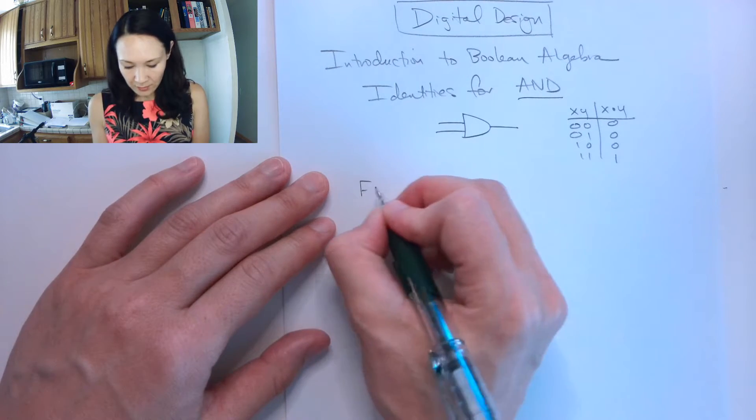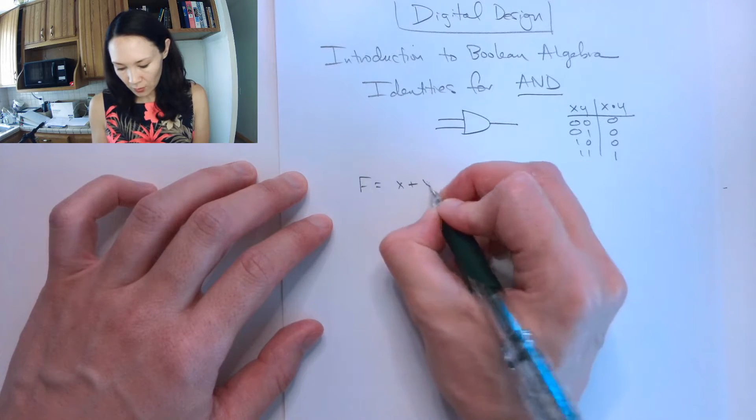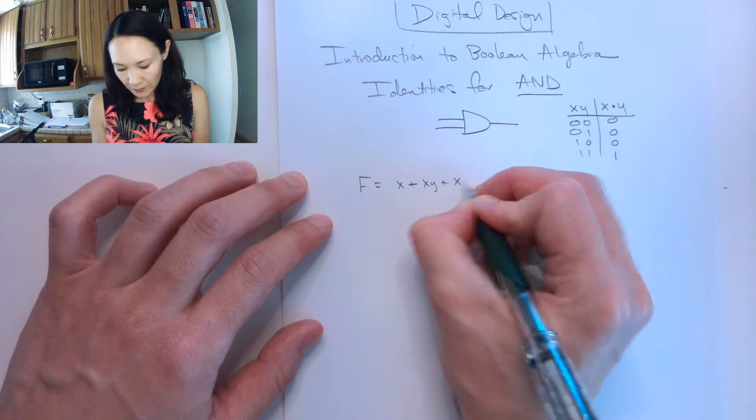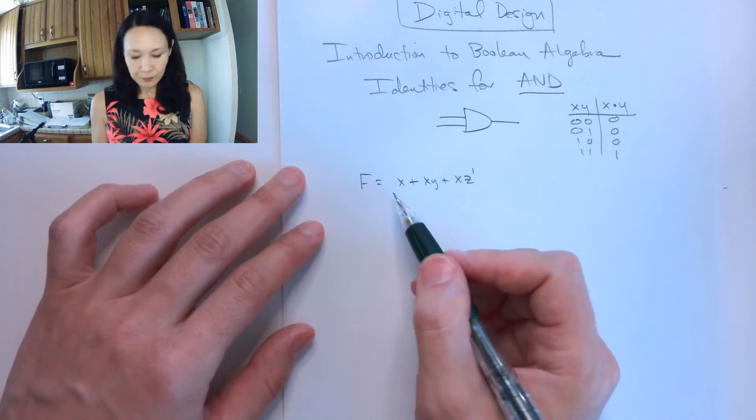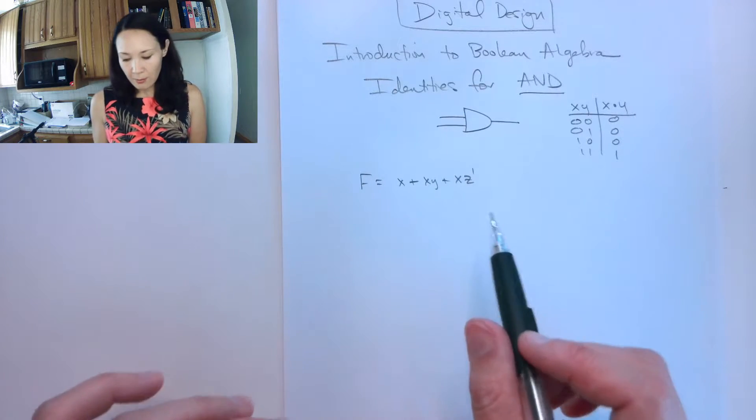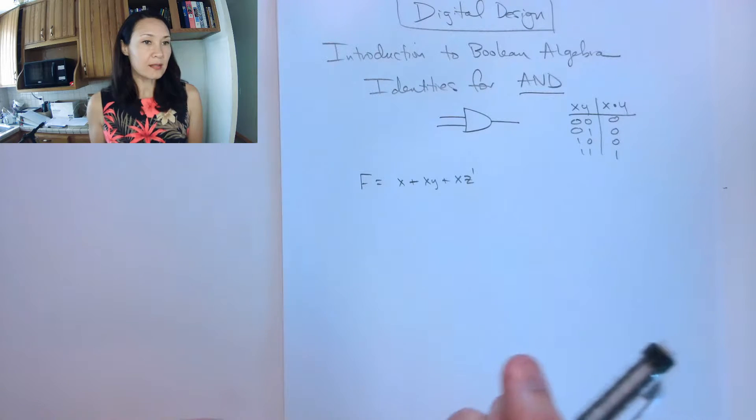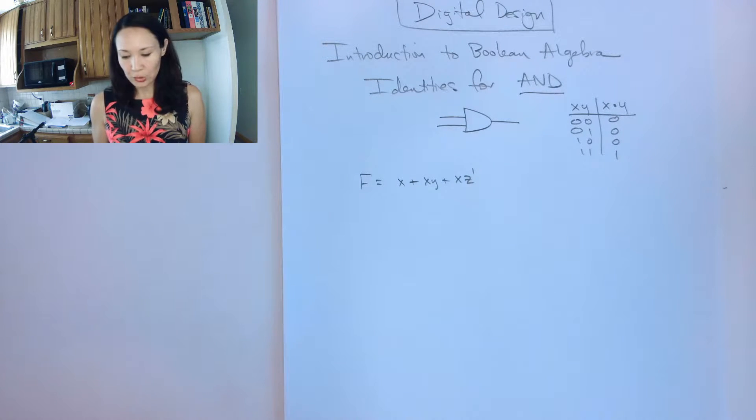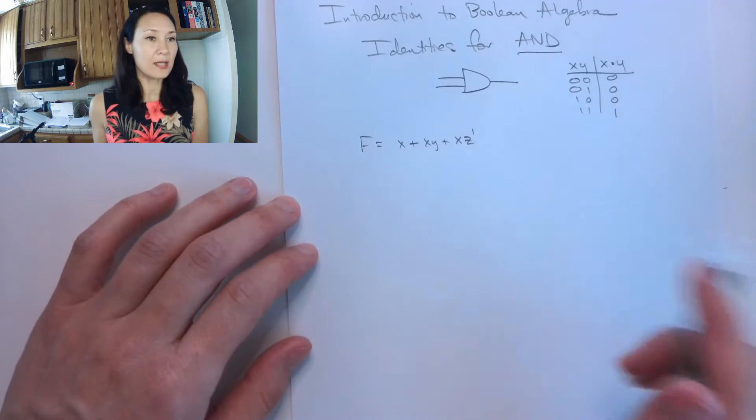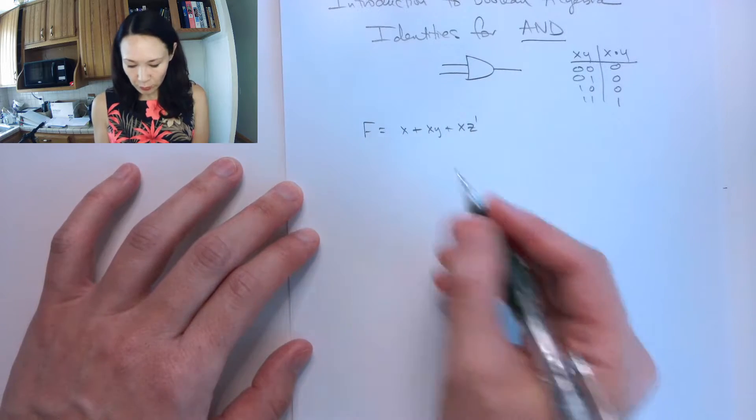If we have some kind of logical function like x or xy or x and z naught, we can make logic gates to implement this function. But before we do that, we want to see if we can simplify and minimize it so we can build it with fewer gates, which will increase speed and decrease complexity and cost. Let me show you the identities for simplifying an algebraic expression using Boolean algebra.